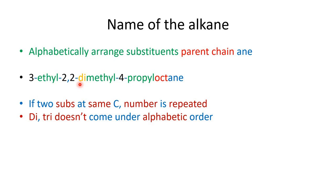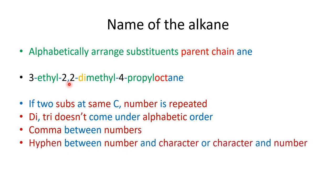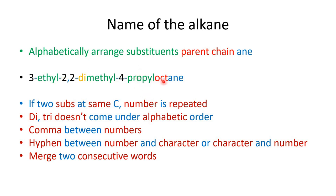Always put a comma between consecutive numbers, and always put a hyphen between a number and a letter or a letter and a number. Merge two consecutive words — for example, propyl is merged with octane to give propyloctane. The full name is written as: substituents in alphabetical order, then the parent chain name, then the suffix -ane. For example: 3-ethyl-2,2-dimethyl-4-propyloctane. If 2 substituents are on the same carbon, the number is repeated.